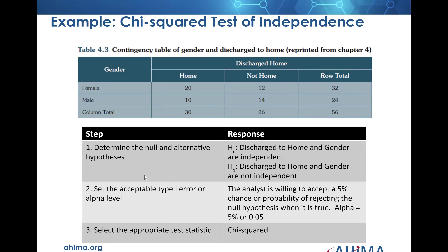The steps here are to determine both the null and the alternative hypothesis. That would be: a patient being discharged to home and their gender are totally independent and have no relationship — or they are discharged to home and gender is not independent; in other words, there is a relationship. Then we need to set the acceptable type 1 error, or the alpha level. So we're willing to accept a 5% chance — this is very common — or probability of rejecting the null hypothesis. We can live with the 5% probability that the null hypothesis is wrong when it's actually true.